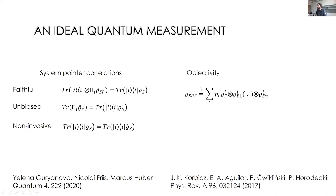For objectivity — the second process — people have defined the so-called spectrum broadcast structure (SBS), meaning the state is highly correlated such that all environments E_1 to E_N are in a conditional state depending on the pointer state. This way, information about the pointer is broadcast to the environment. There are also positivity conditions and strong independence conditions.